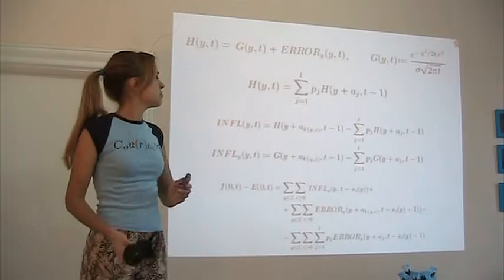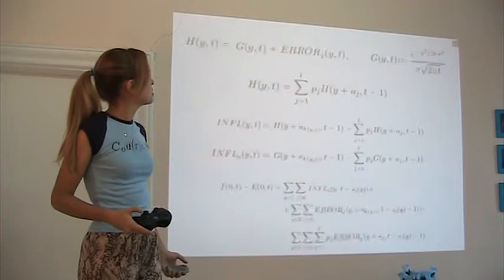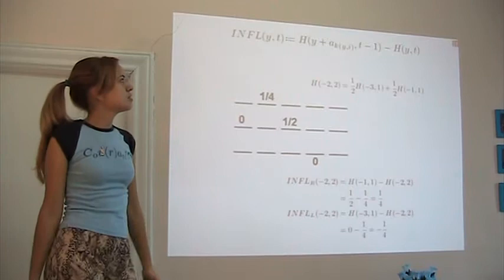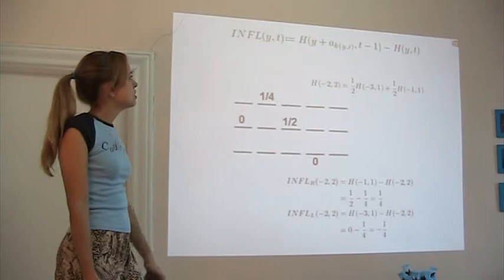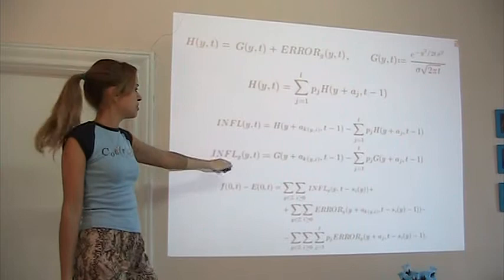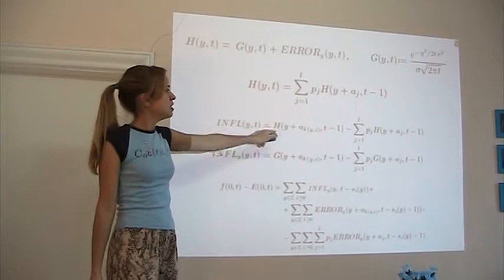So the influence is the new probability minus the old probability. And notice that those two terms use different times. So the first one has t minus 1 time units, and the next one has t. That would get kind of messy, so we use this relationship to rewrite it. And then we just define another function called influence g to be the exact same thing, but using the approximation Gaussian instead of the actual probability function.